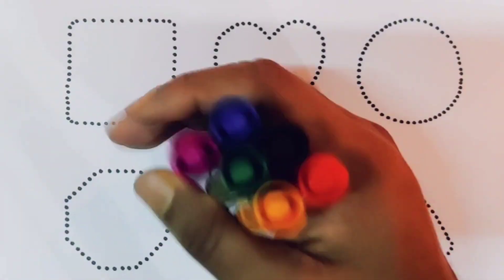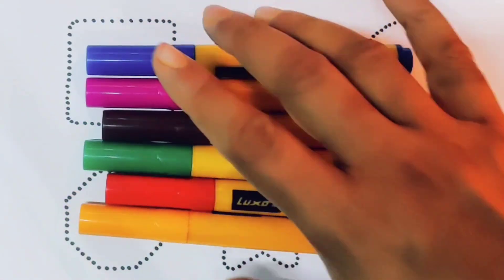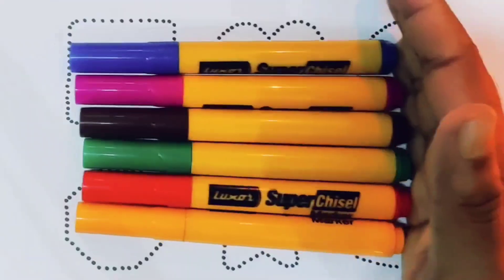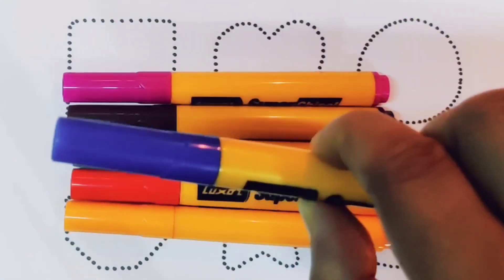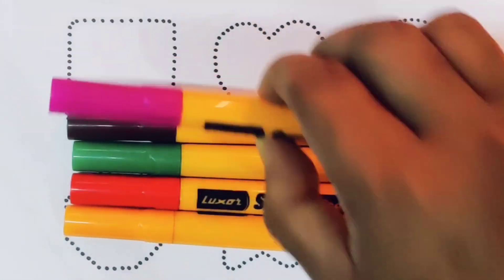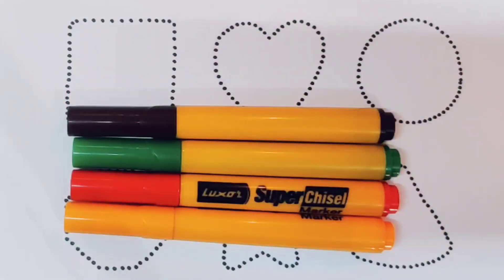Hello kids, welcome to my new video. First we're going to know the colors name: blue color, pink color, chocolate color.